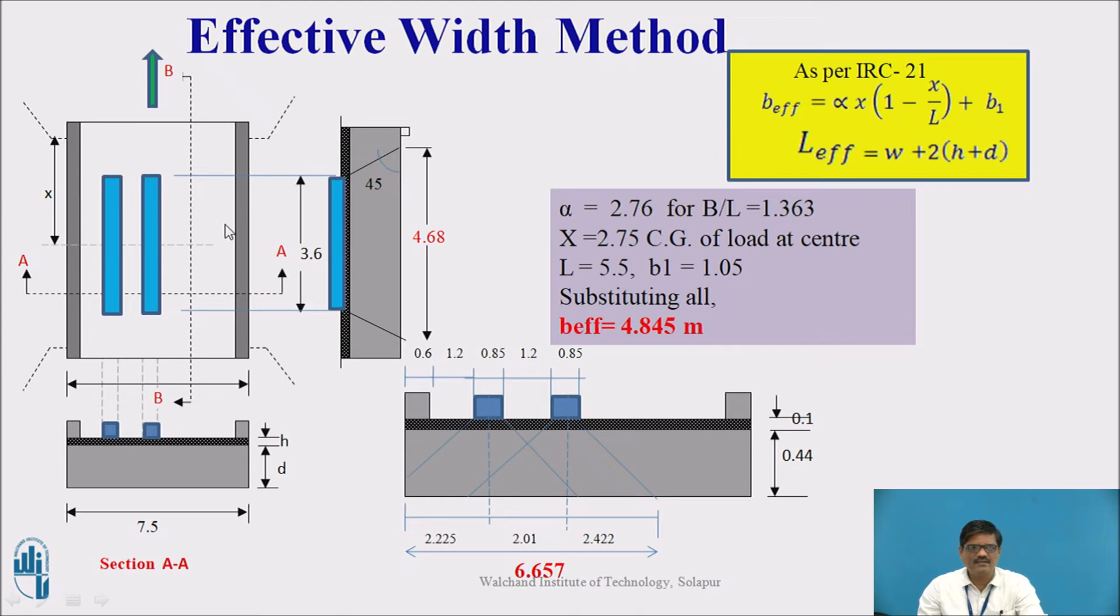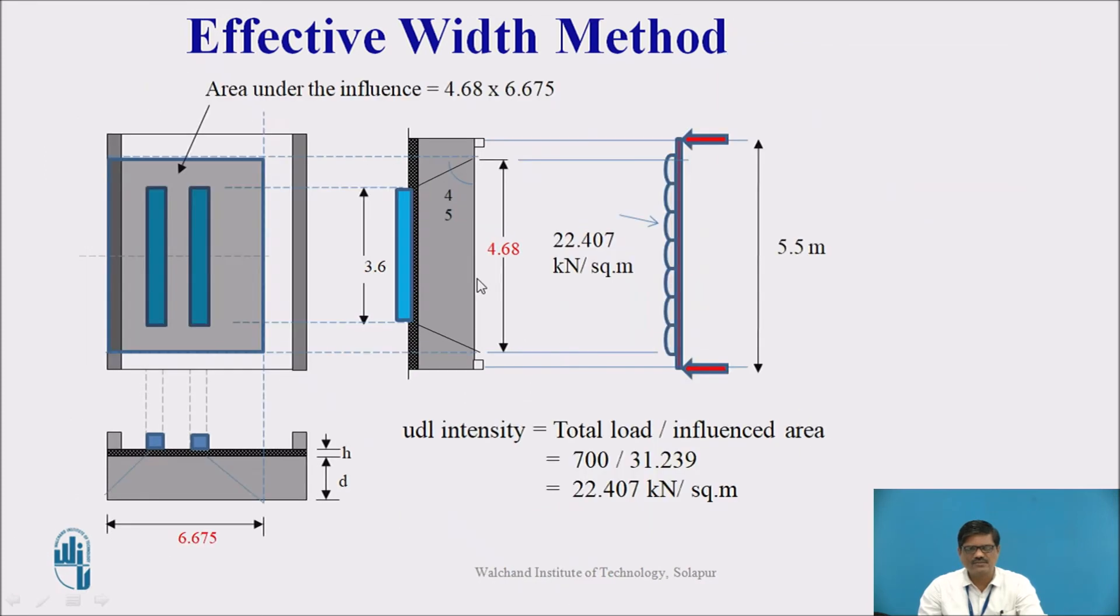Similarly, along the length, the dispersion is to be determined. The length of the vehicle is 3.6 meter. Along the length, the dispersion is at an angle of 45 degrees. Simply knowing the thickness of the wearing coat and the depth of the slab, we can find out the dispersed length as 4.68. Therefore, we have an influenced area with a dimension of 6.657 and 4.68.